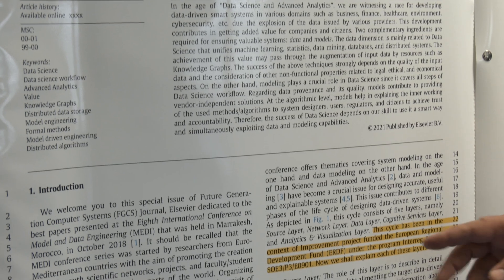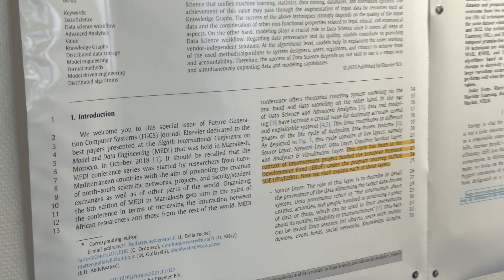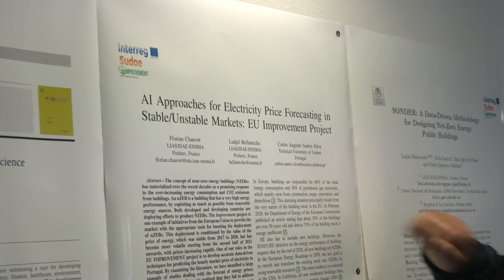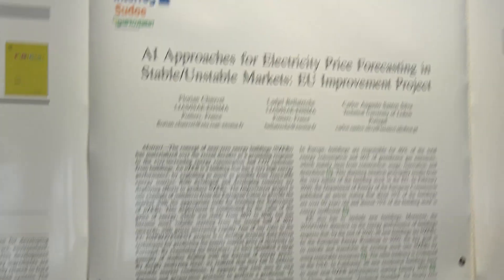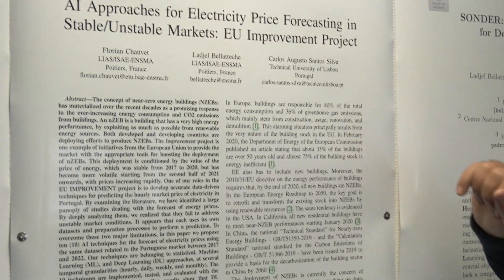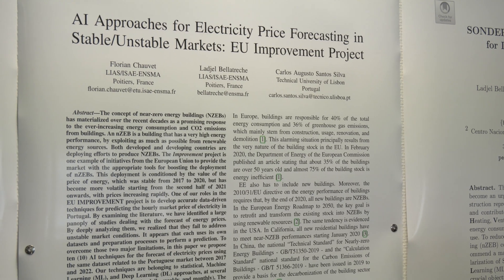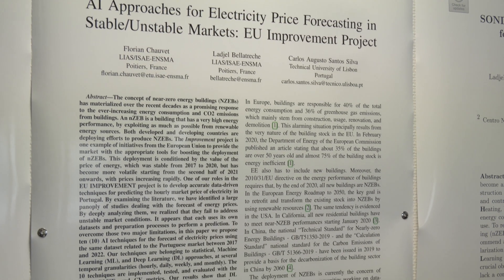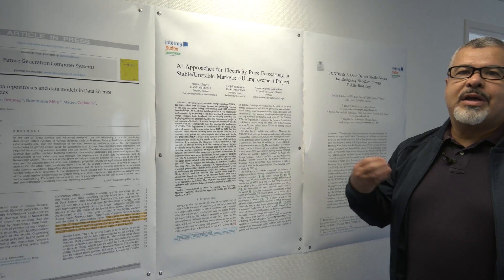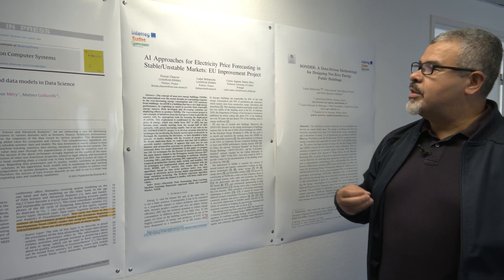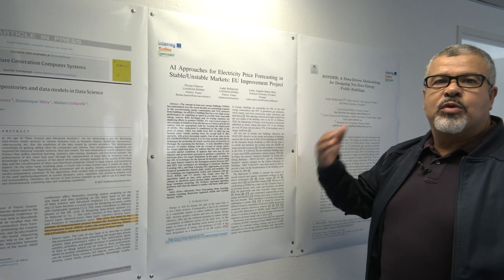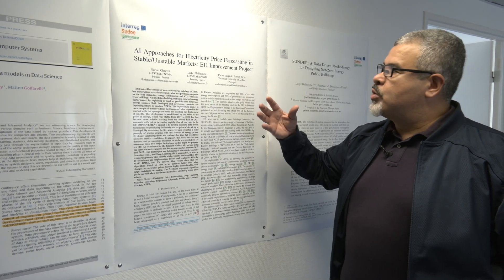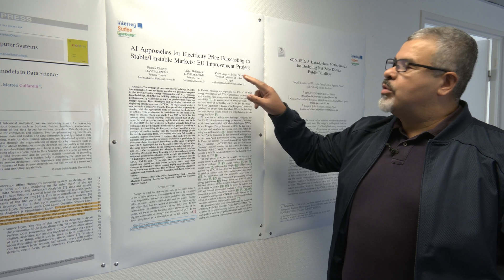For example, here we put that this work has been used in the context of the IMPROVEMENT project funded by European Regional Development Fund. And here we have the fourth paper that we got, with one student from our school. The particularity of this work is that we use machine learning and deep learning techniques to predict the electricity price in stable and unstable markets, and the idea is how we can propose an efficient algorithm with high accuracy to predict the price of electricity in this unstable system.